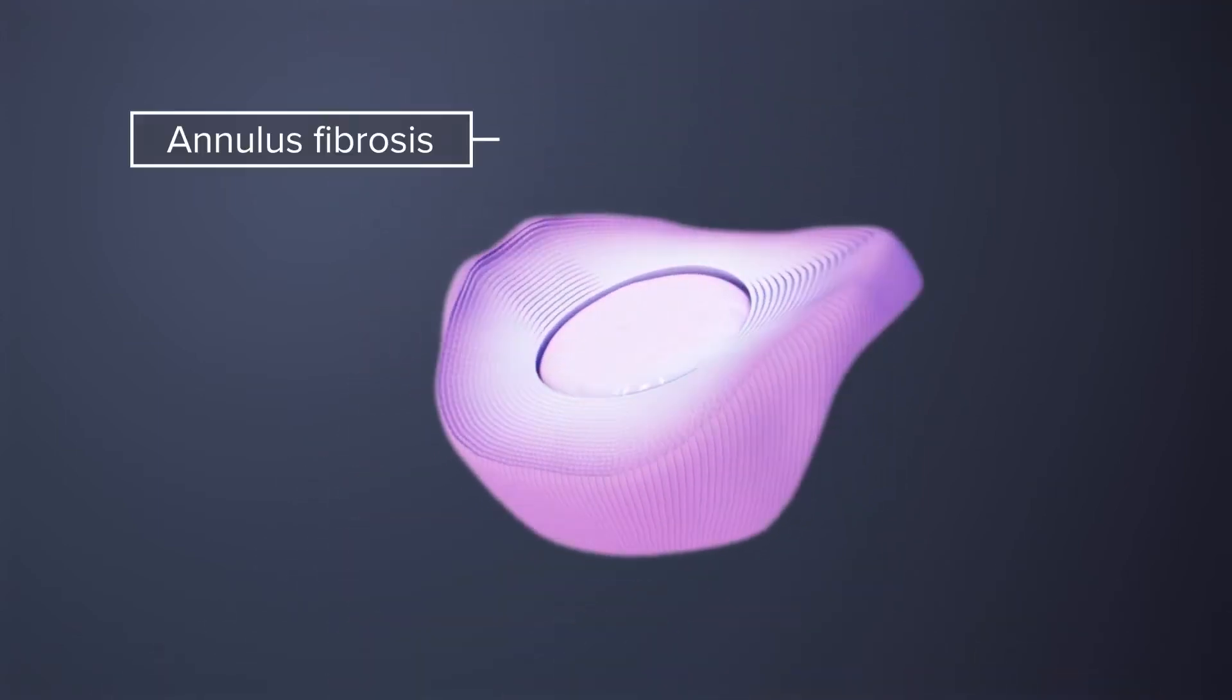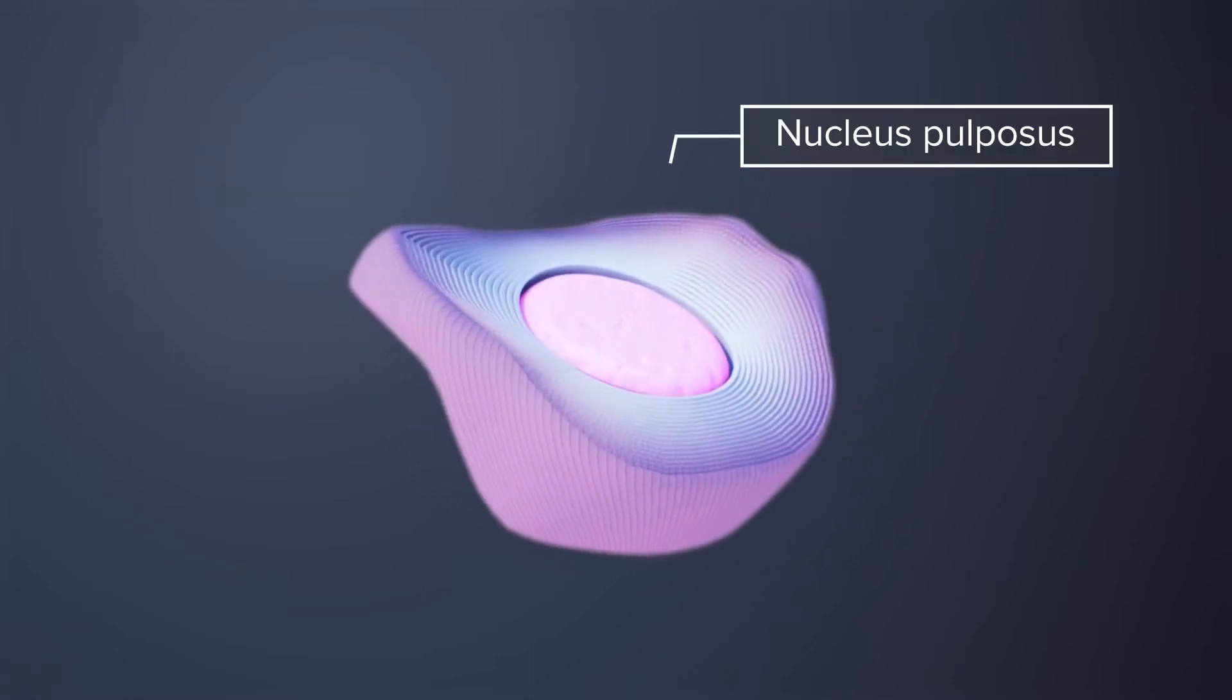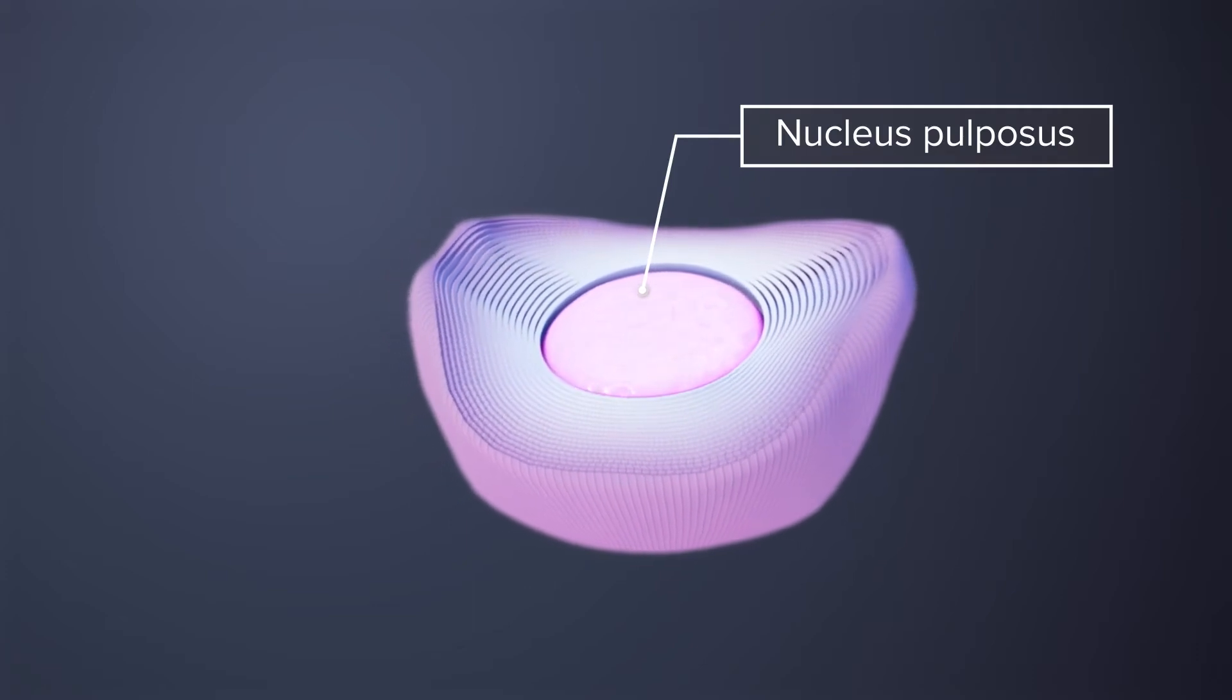Each disc is made of a tough outer ring called the annulus fibrosis, which encapsulates a gel-like interior called the nucleus pulposus.